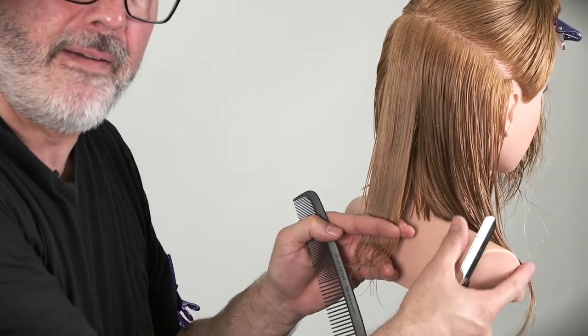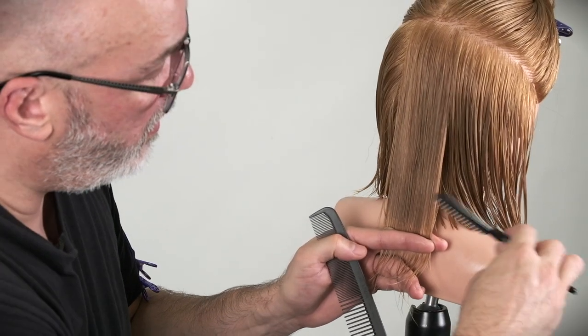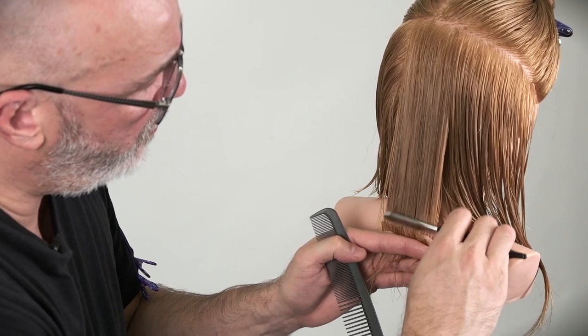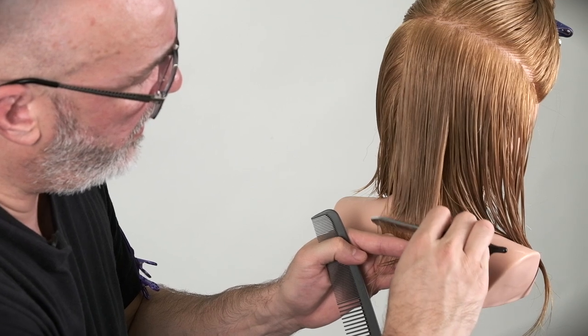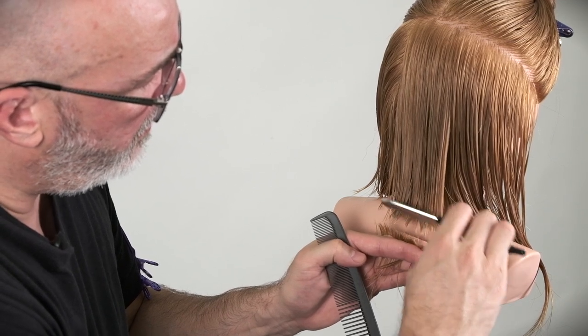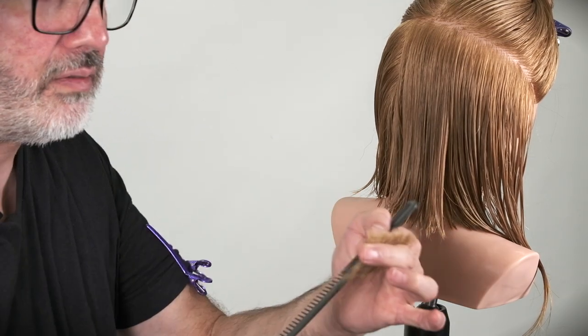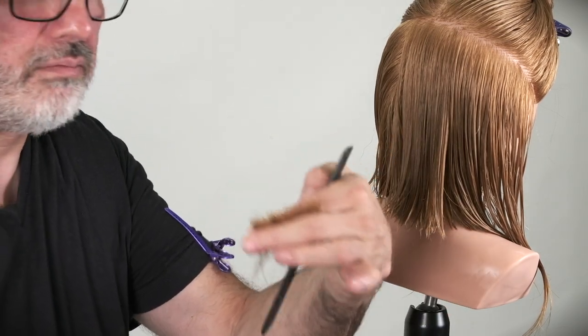So let's go through. 45 degree angle. Even stroke. Keep that hand as stationary as possible. Cut that off. And we end up with a nice cut line.